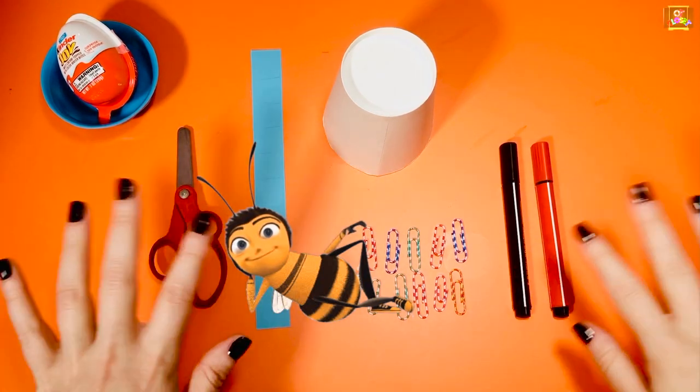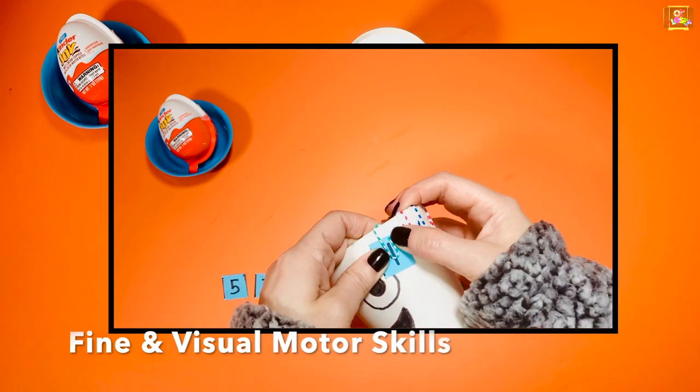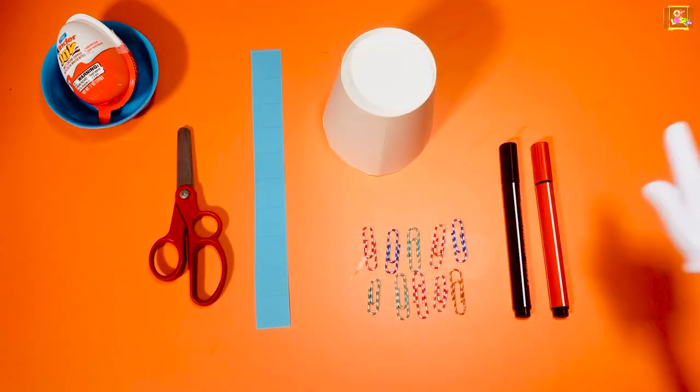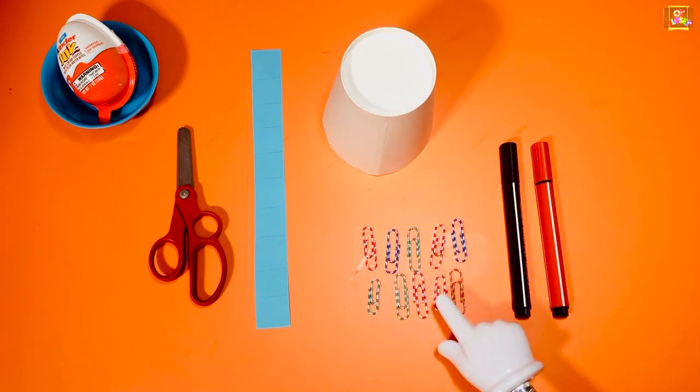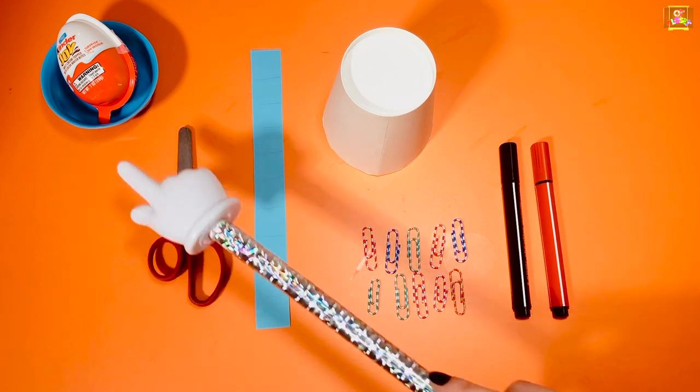Hi my busy bumblebees, this is Miss Olga, occupational therapist. Let's cut, color, and play a number game. For this activity you will need red and black markers, a cup, 10 paper clips, a strip of paper, scissors, and when we're done we open the Kinder Egg.